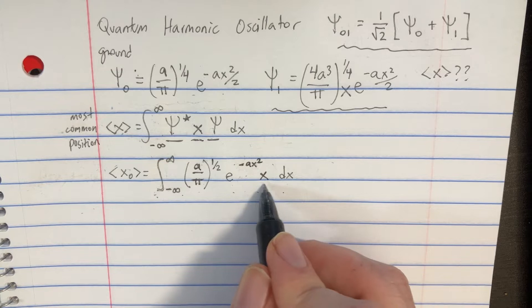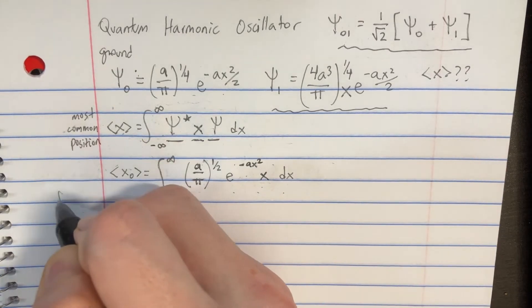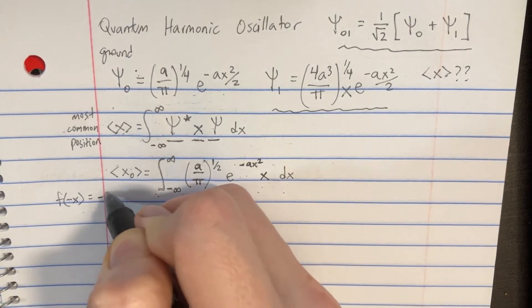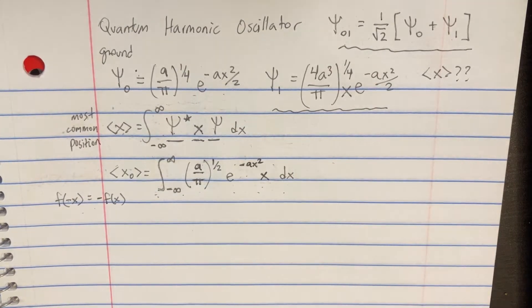In order to solve this integral, let's realize that we have an odd function. So if we plug in f of negative x, we're going to get negative f of x, which means we'll get negative x.